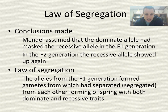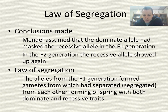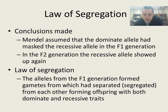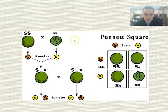The law of segregation states that alleles from the F1 generation form gametes in which those alleles separated or segregated from each other, forming offspring with both dominant and recessive traits. The F1 generation had genes passed on from both parents, and within the process of forming new offspring, that genetic information separated from each other, producing different offspring with both dominant and recessive traits.